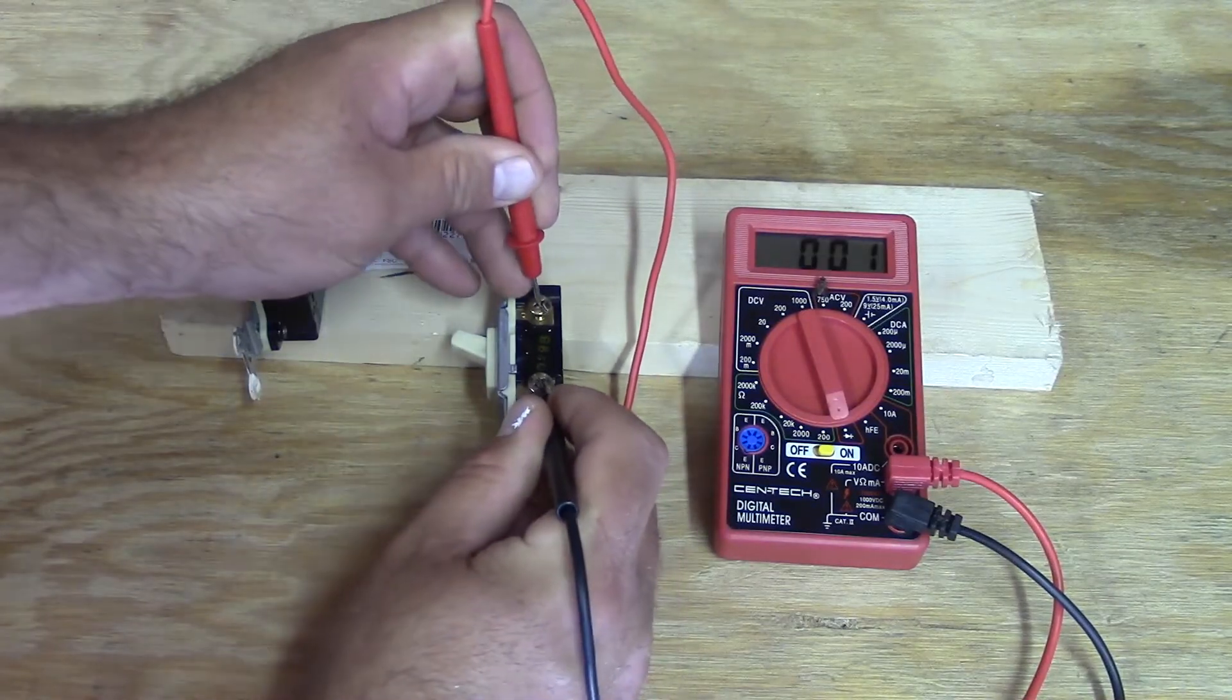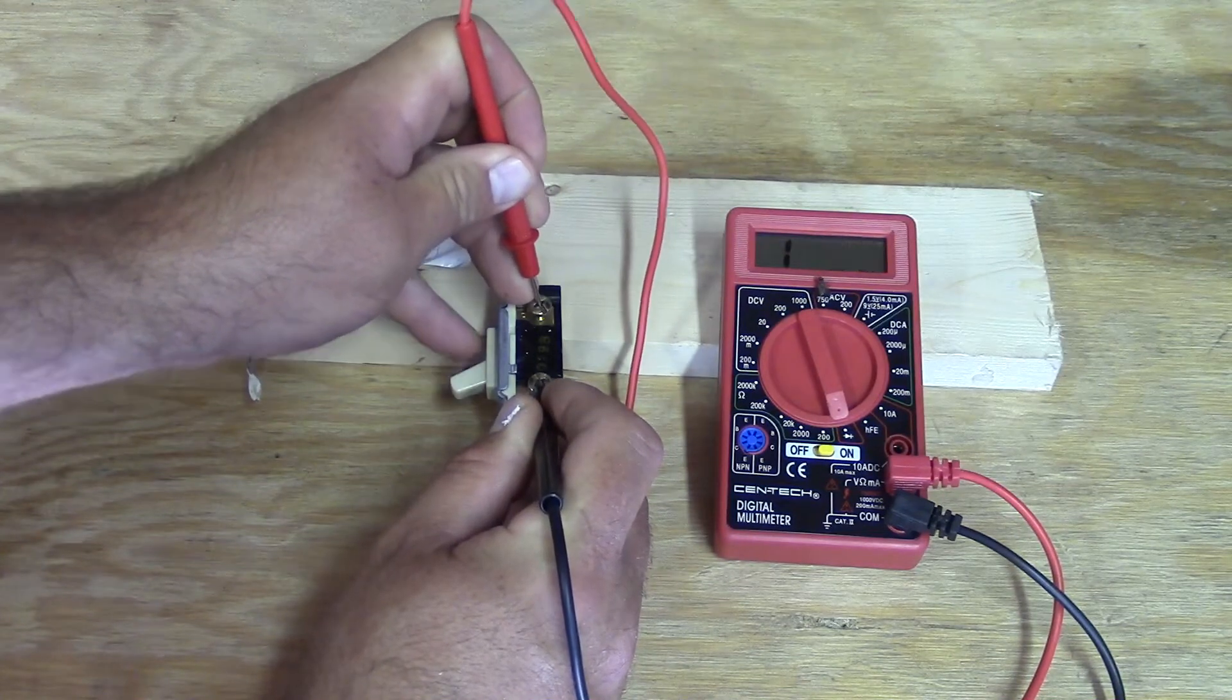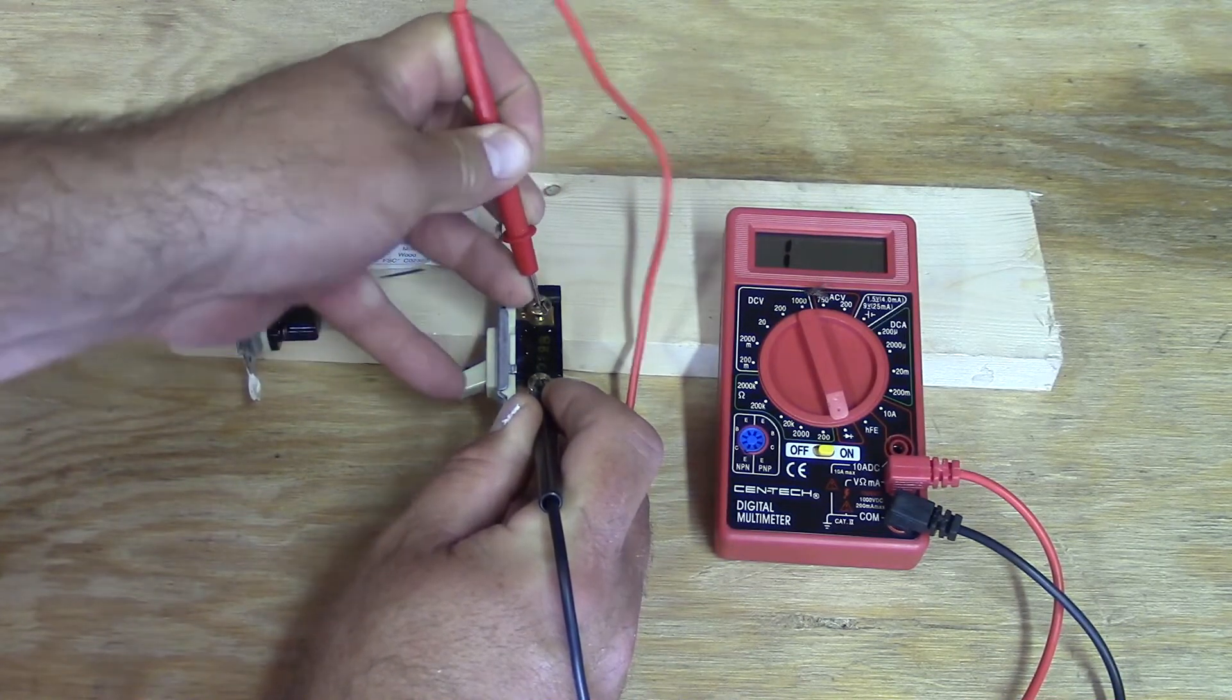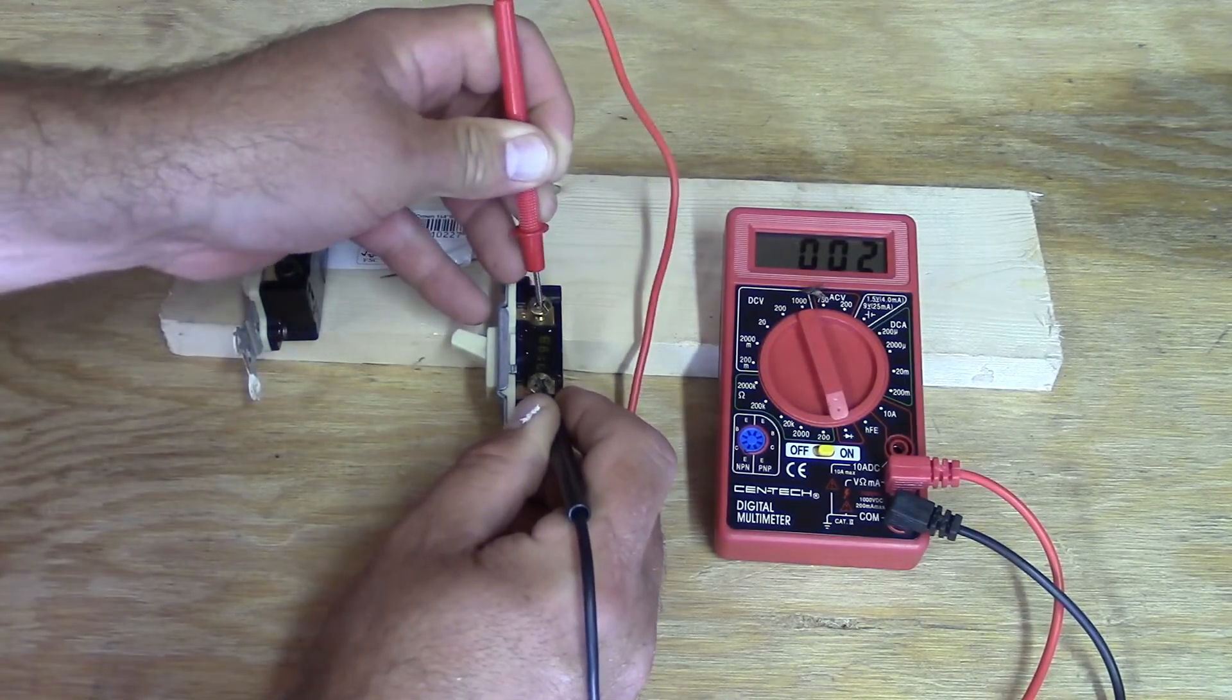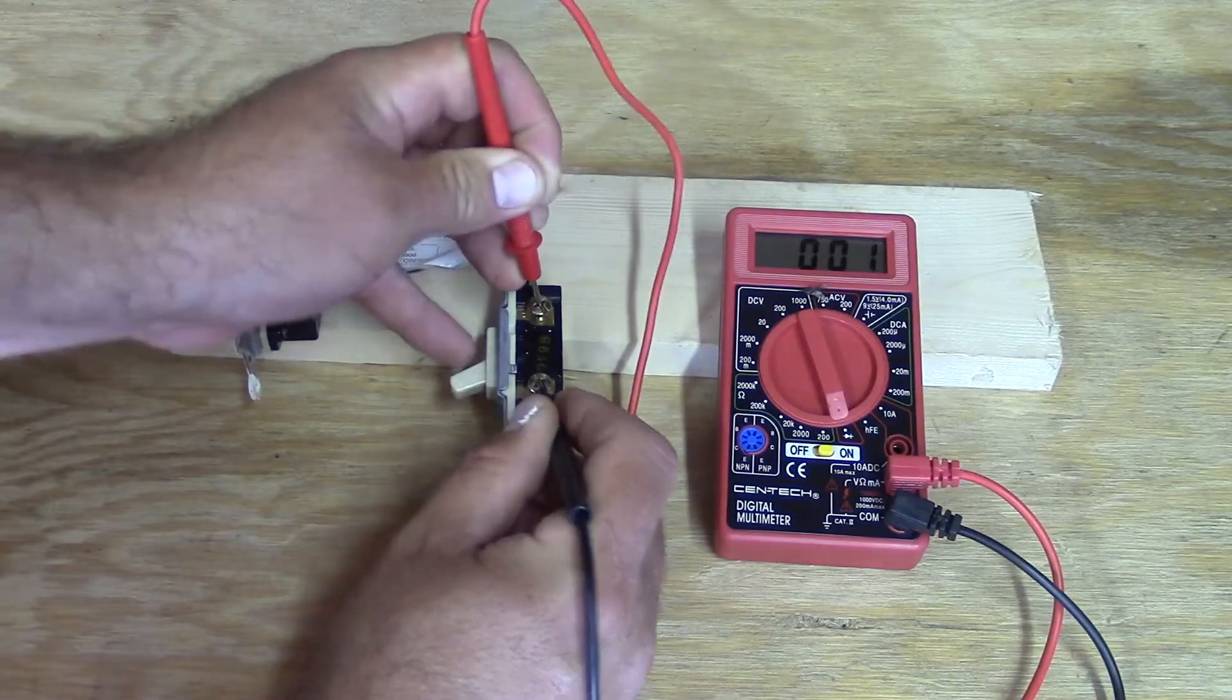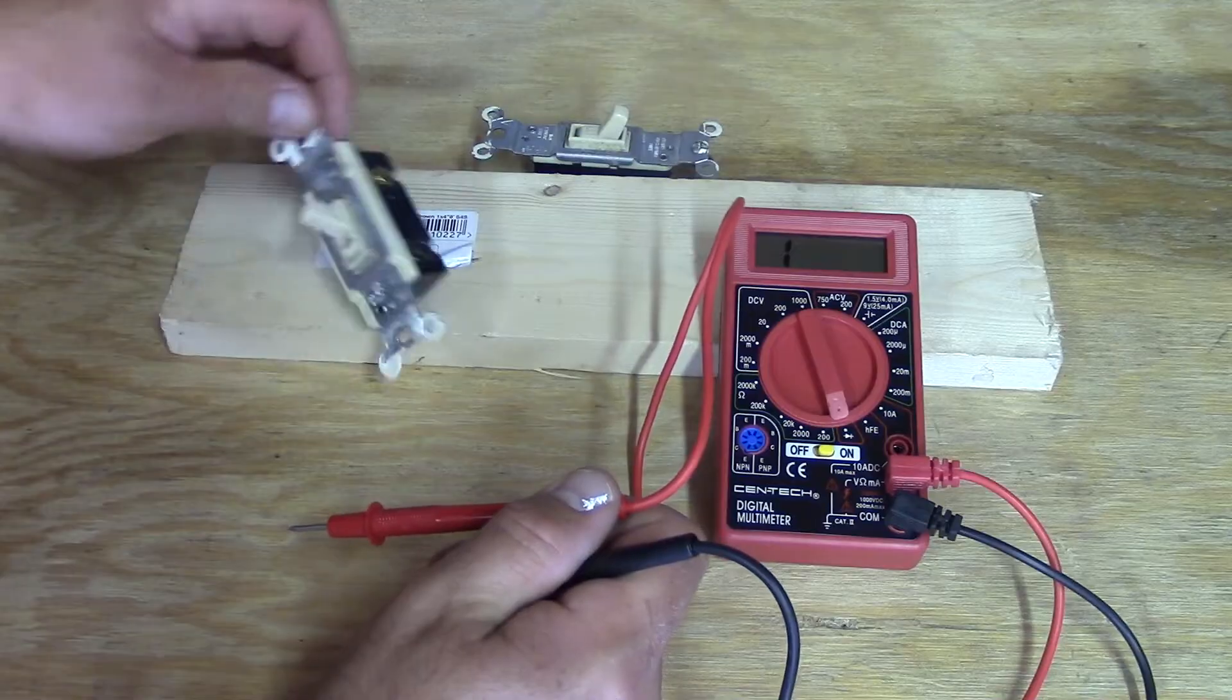You touch across like this and you can see how it's zeroing out. When I switch the switch to off, it opens up. Switch it back on again, it closes. So that tells us right now, this switch is a working switch. This is a good switch. It's actually just one somebody I had on a job, they wanted to change the colors out.